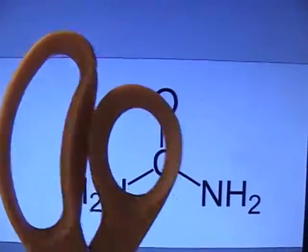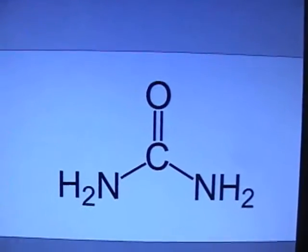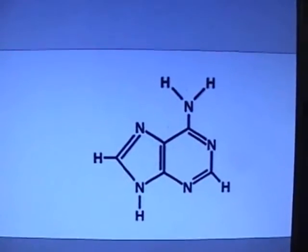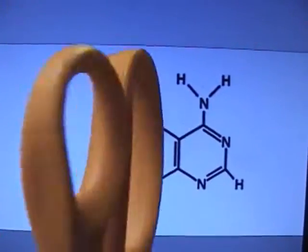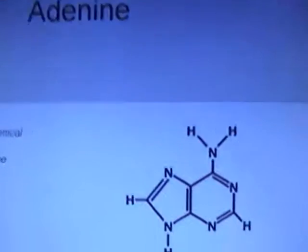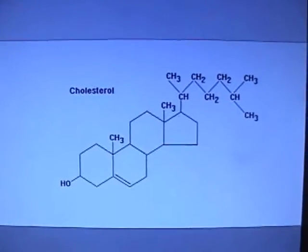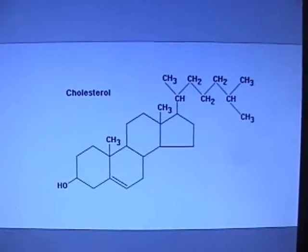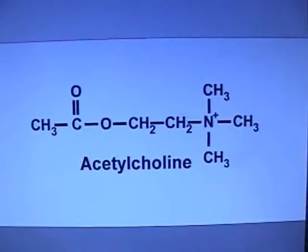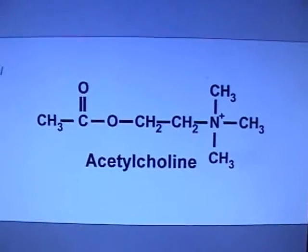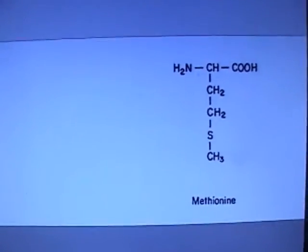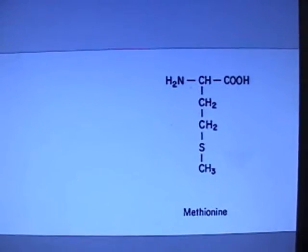Okay, now real quick, we're going to review. This right here — if you said urea, you are correct. How about this one? This is the tricky one because it's the one that binds with thymine in DNA. It's called adenine. This one is pretty easy because it's written on the screen — that's cholesterol. This one is acetylcholine; that's a neurotransmitter and it's a chemical that goes between nerve cells, and if you turn it off, you can't feel anything.